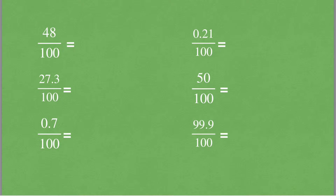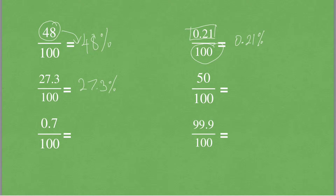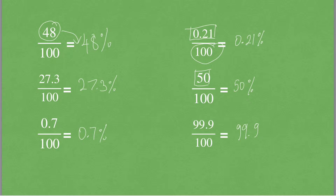When writing fractions with denominator 100 in percentage form, we write the numerator as it is and add a percent sign. So 48 out of 100 is 48%, 0.21 out of 100 is 0.21%, 27.3 out of 100 is 27.3%, 0.7 out of 100 is 0.7%, 50 out of 100 is 50%, and 99.9 out of 100 is 99.9%.